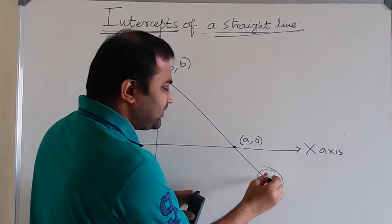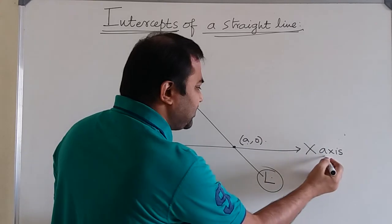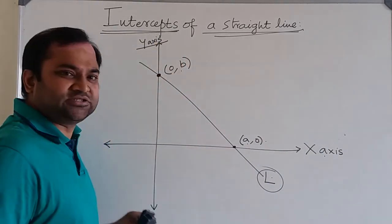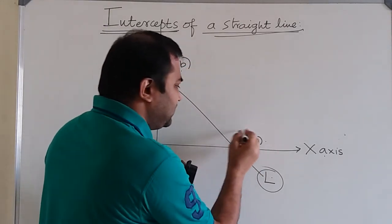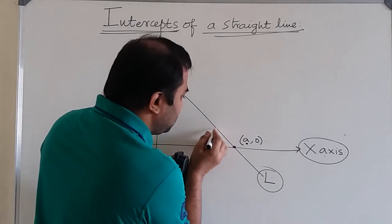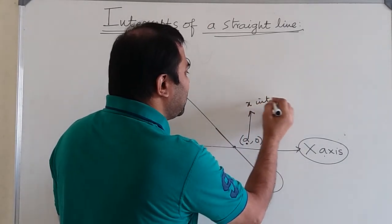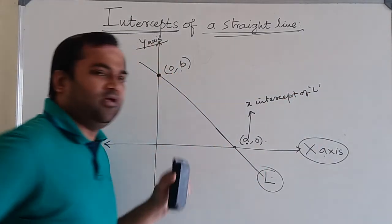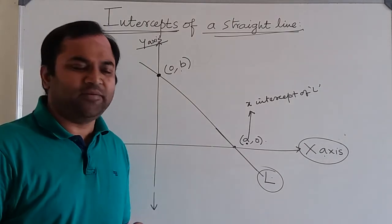You can see that this straight line L is passing through the point (a, 0) on the x-axis and the point (0, b) on the y-axis. Now, the x-coordinate — small a — in the point on the x-axis through which the line is passing is said to be the x-intercept of the straight line L.